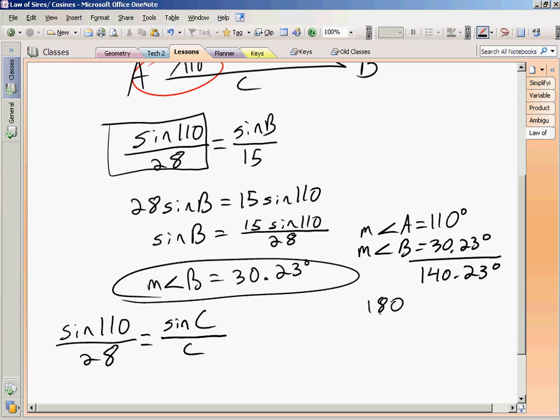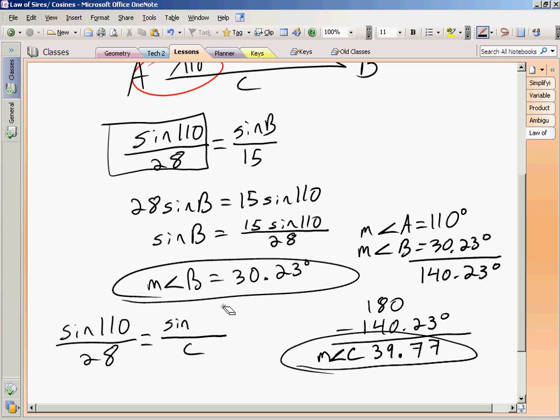Subtract that from 180. And you get 39.77 degrees. So that's the measure of angle C. So that's actually the fifth piece of information that I need to know. And I can erase this over here and fill in that 39.77 degrees.